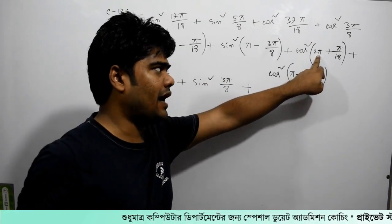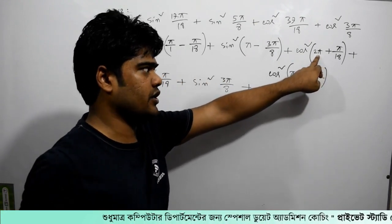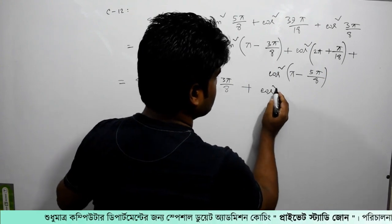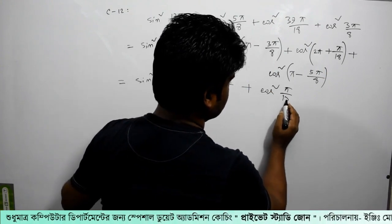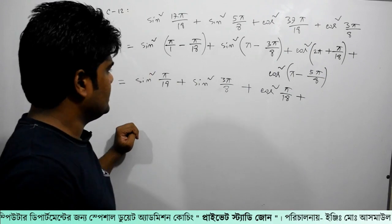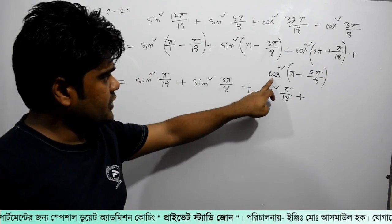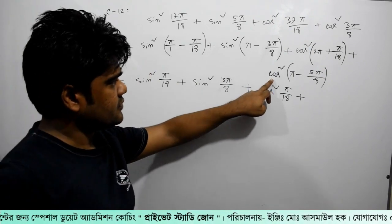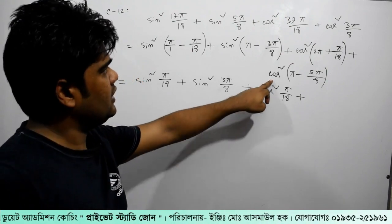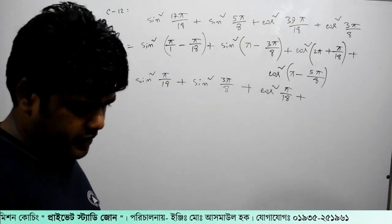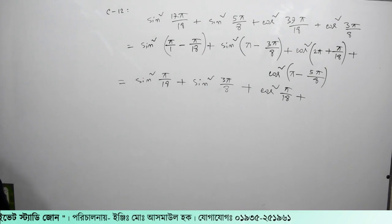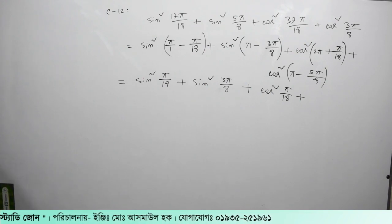3 pi by 8 plus this means 2 pi, that means 4 pi, that means 0, cos squared, pi by 8 plus this means 3 pi, 5 pi by 8, 3 pi by 8. Is this right? 5 pi by 8, 3 pi by 8.